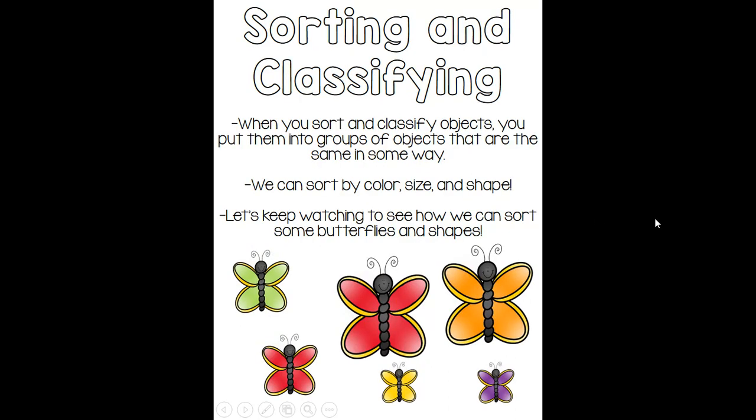When we sort and classify objects, we are going to be putting them into groups based on how they are the same. So putting them into groups of objects that are the same in some way. We can sort objects by their color, their size, and their shape.